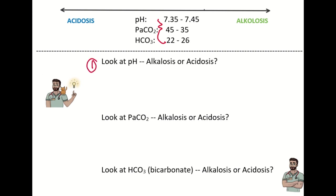Step one is to take a look at the pH. If the pH is less than 7.35, the person is in acidosis. If the pH is greater than 7.45, they're going to be in alkalosis. The pH can also be normal — for example, a pH of 7.4 is the absolute midpoint.